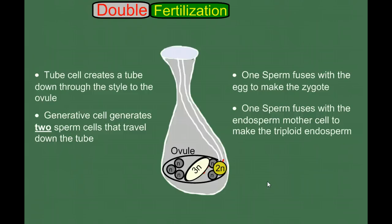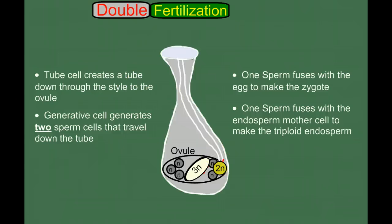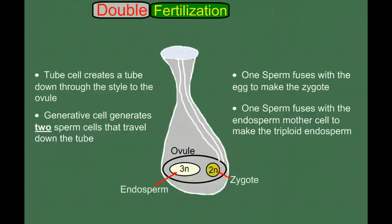The second sperm fuses with the endosperm mother cell to make a triploid cell that will be the beginning of our endosperm, our nutritive tissue. Since there are two fusion events, we call this double fertilization. This is a key difference between gymnosperms and angiosperms — in gymnosperms the nutritive tissue is haploid, but in the angiosperm, because of this unique N+N cell, the nutritive tissue is triploid and is fertilized by one of the sperm. The synergids simply go away.